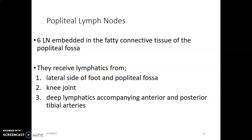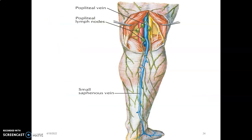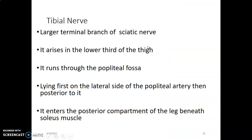So the popliteal lymph nodes drain the lateral aspect of the foot, the heel, the popliteal fossa, the knee joint, and deep lymphatics following the anterior and posterior tibial vessels.